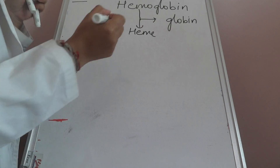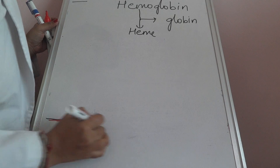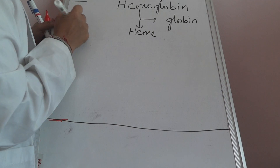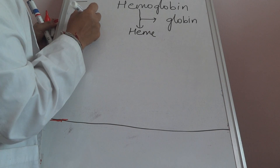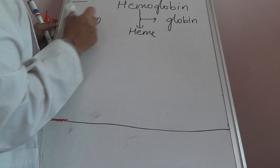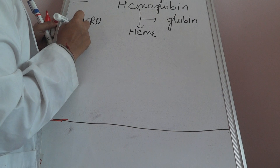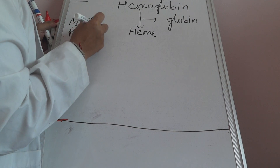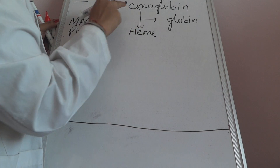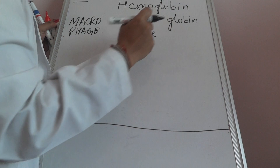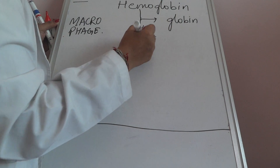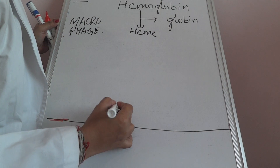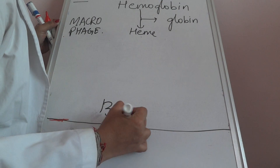This part of the reaction, till the formation of bilirubin, will take place in the macrophage. In the macrophage, hemoglobin is first broken down into heme and globin, and the heme will finally be broken down into bilirubin.